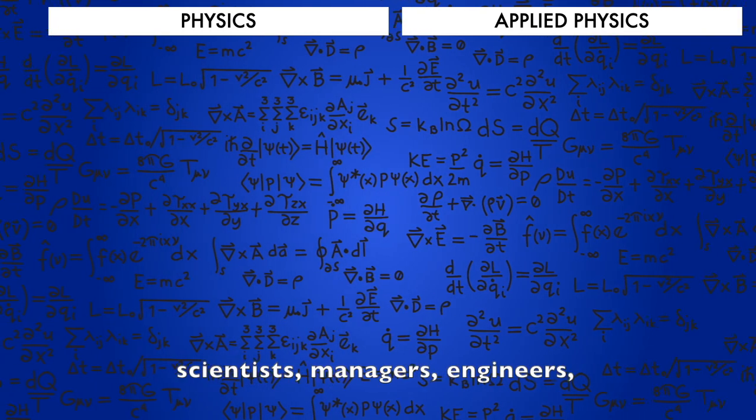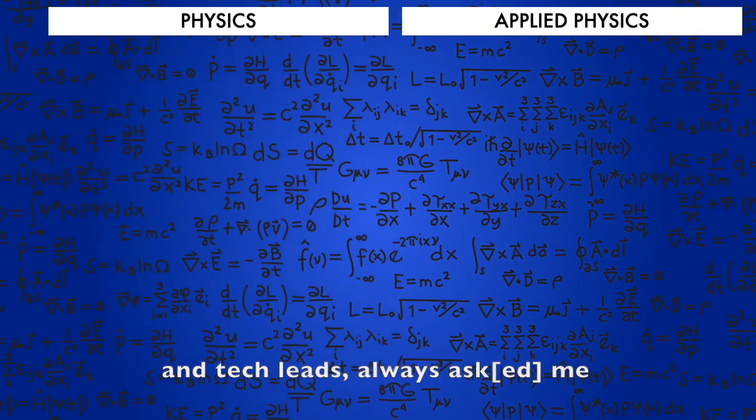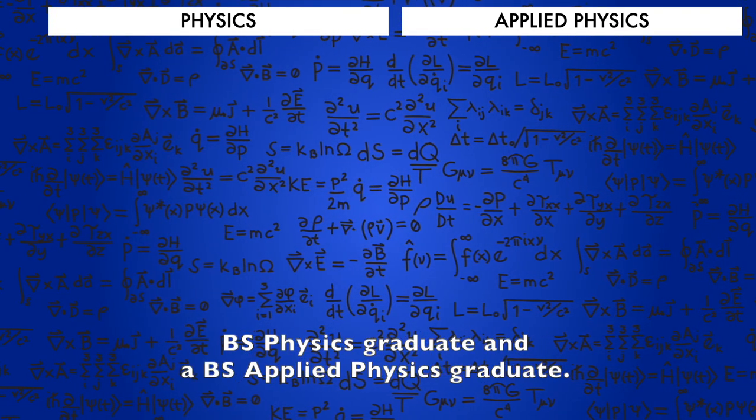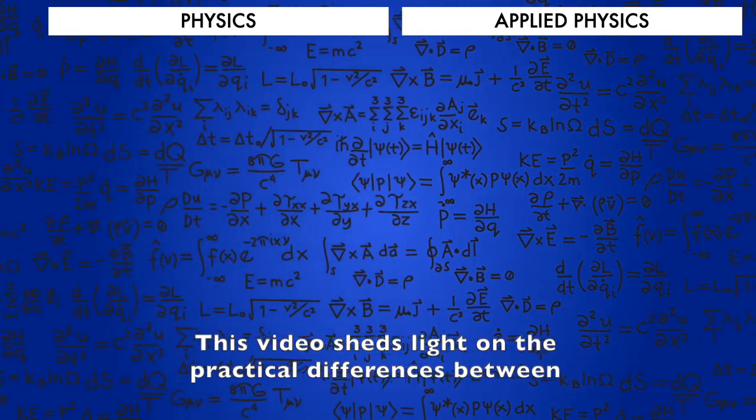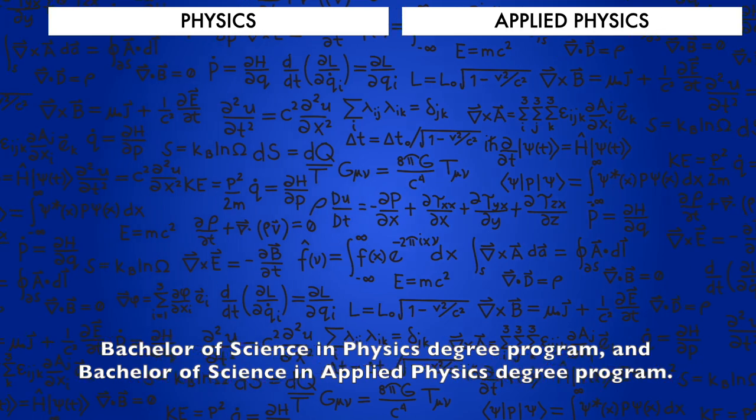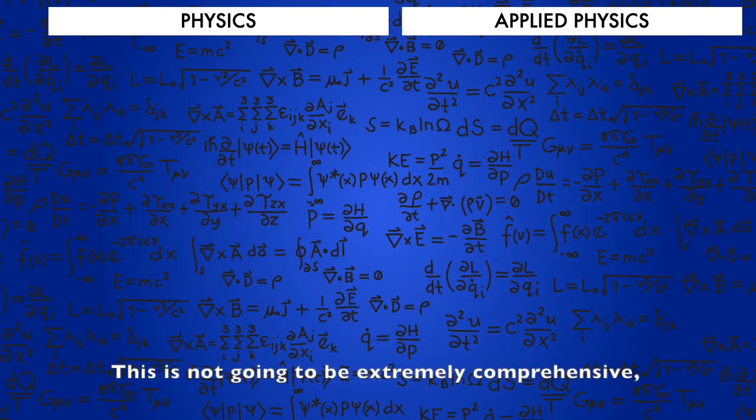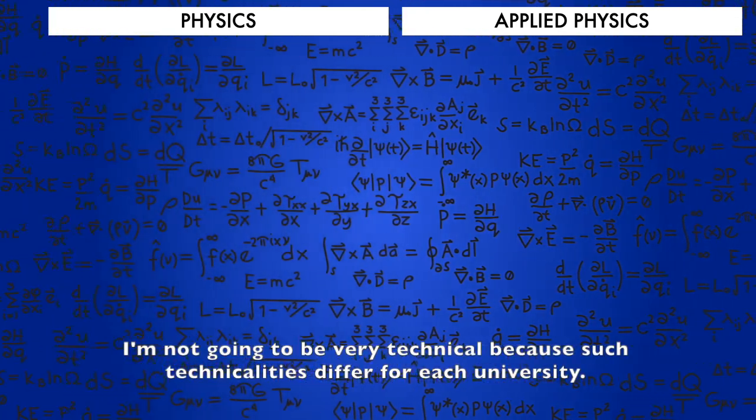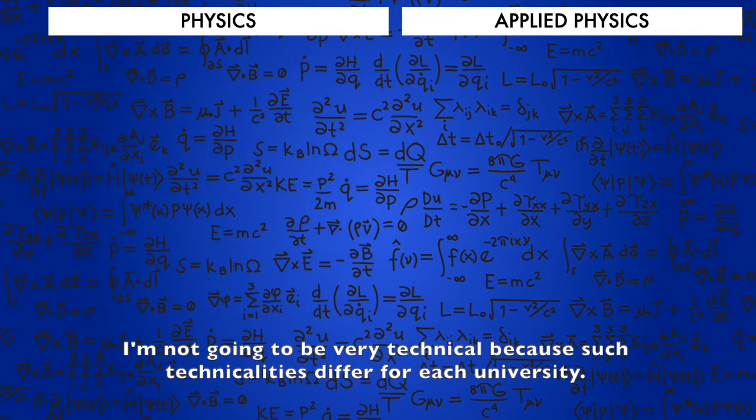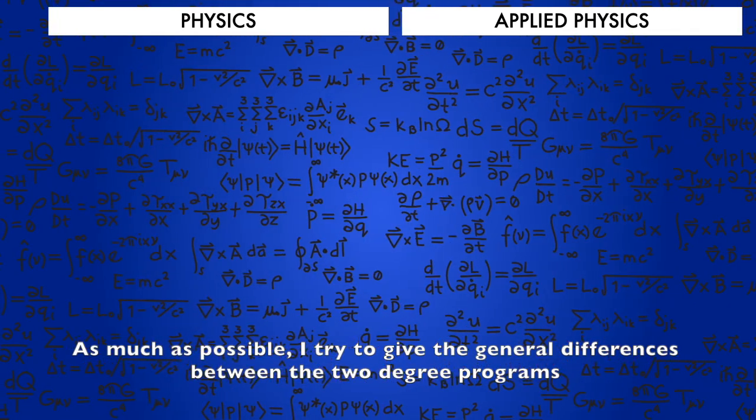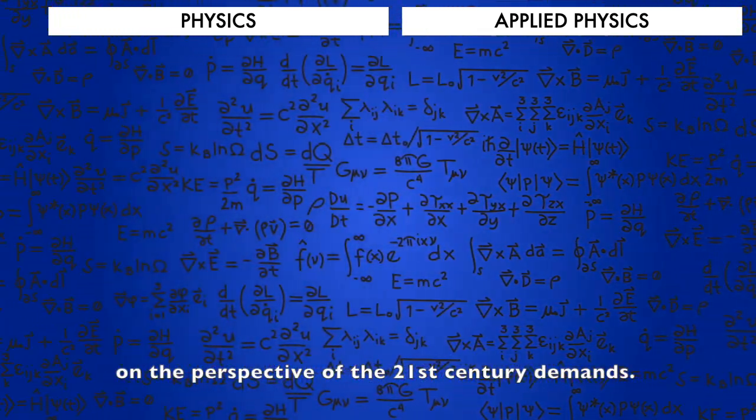During job interviews, scientists, managers, engineers, and tech leads always ask me the difference between a BS Physics graduate and a BS Applied Physics graduate. This video sheds light on the practical differences between Bachelor of Science in Physics degree program and Bachelor of Science in Applied Physics degree program. This is not going to be extremely comprehensive. I'm not going to be very technical because such technicalities differ for each university. As much as possible, I try to give the general differences between the two degree programs on the perspective of the 21st century demands.